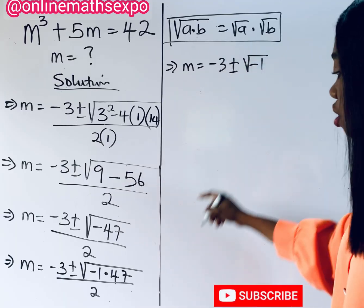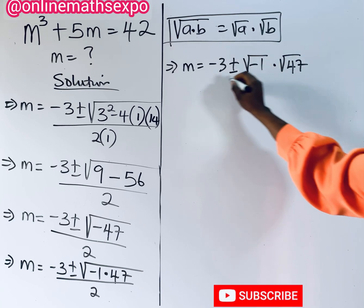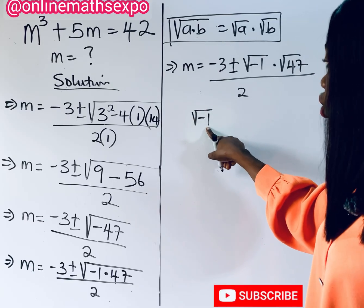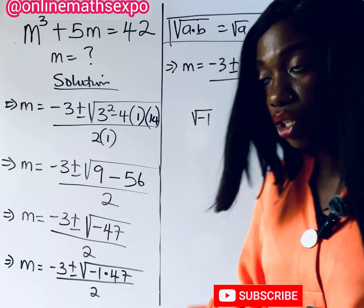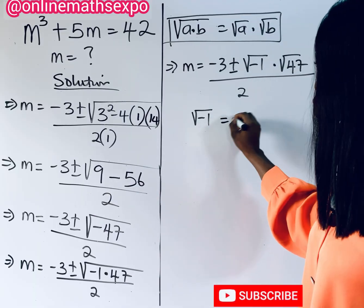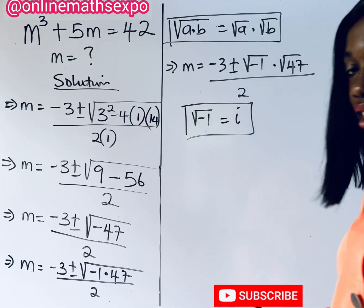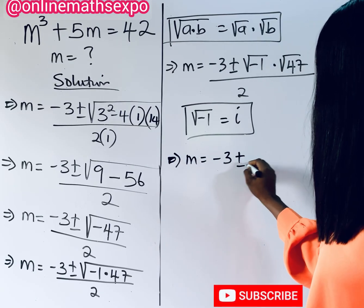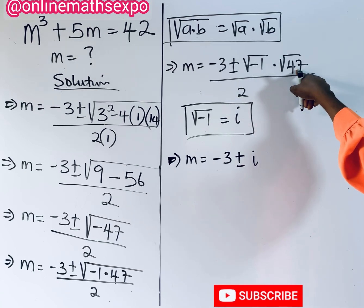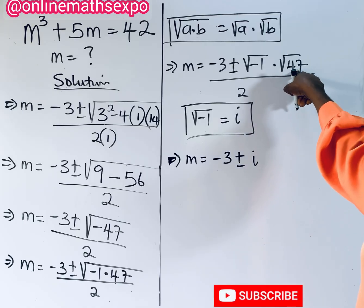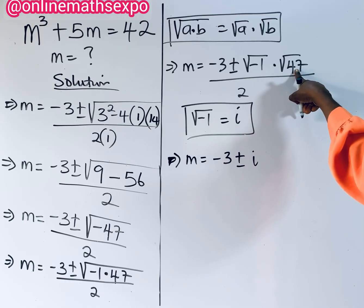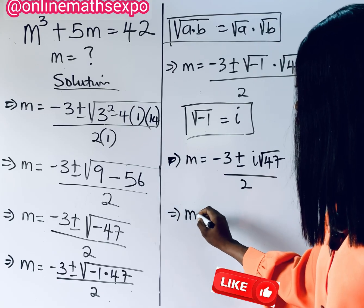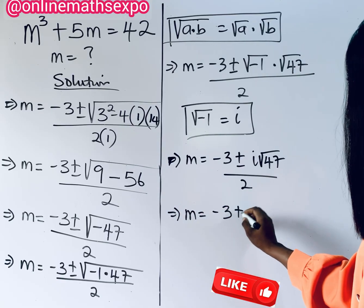Remember that the square root of negative 1 is always represented using the imaginary unit i, since this is an imaginary number. So square root of negative 1 equals i. Substituting back, we have m equals negative 3 plus or minus i times square root of 47, all divided by 2. Note that square root of 47 cannot be simplified since 47 is prime.